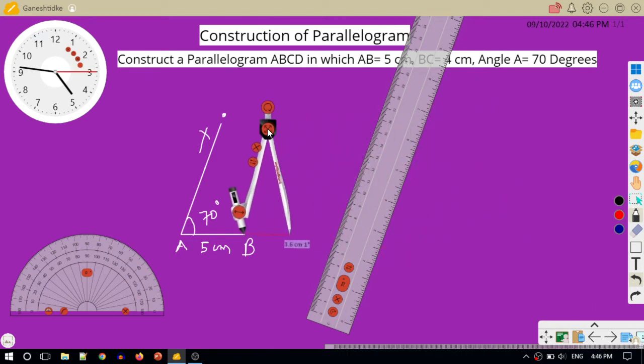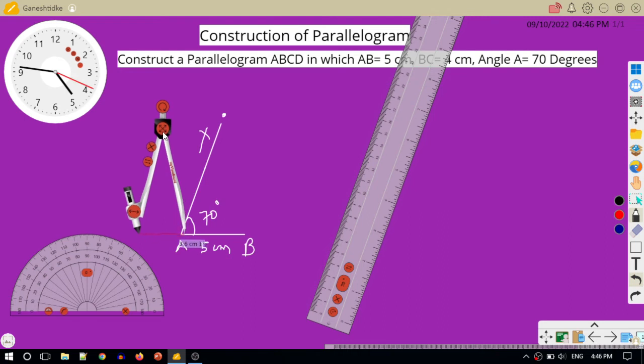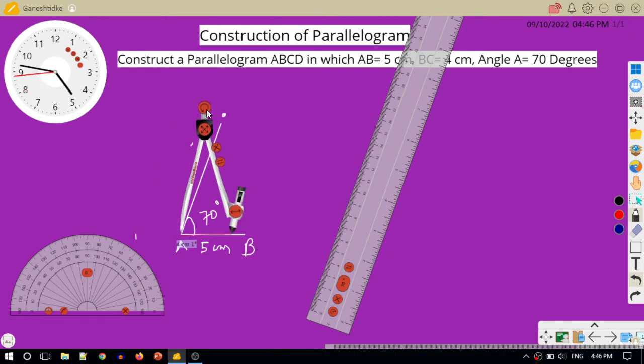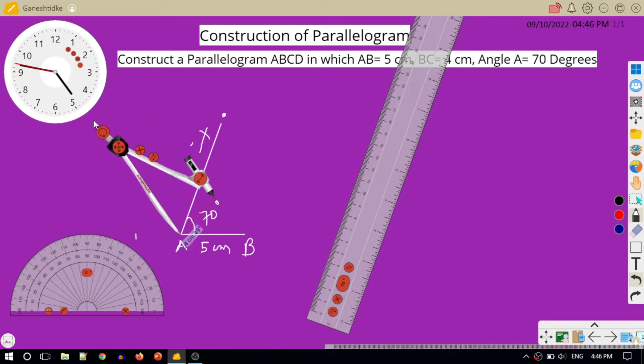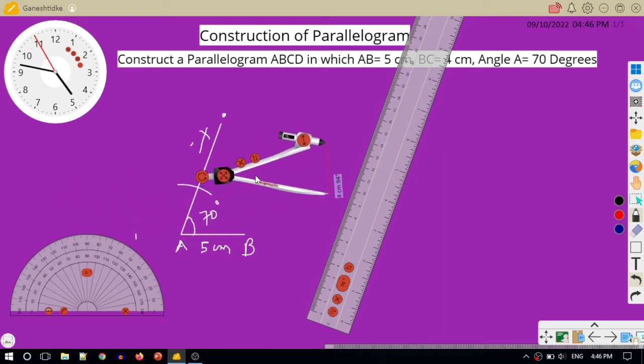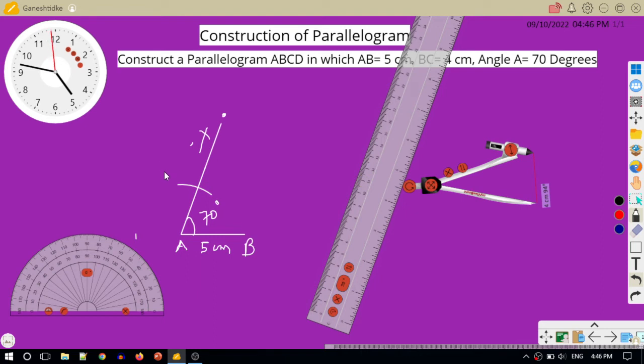With the help of the compass, first I will adjust 4 centimeters. This is 4 centimeters and I will cut off 4 centimeters from AX. So this is my AD, where the arc cuts AX. That point is D and this is 4 centimeters.